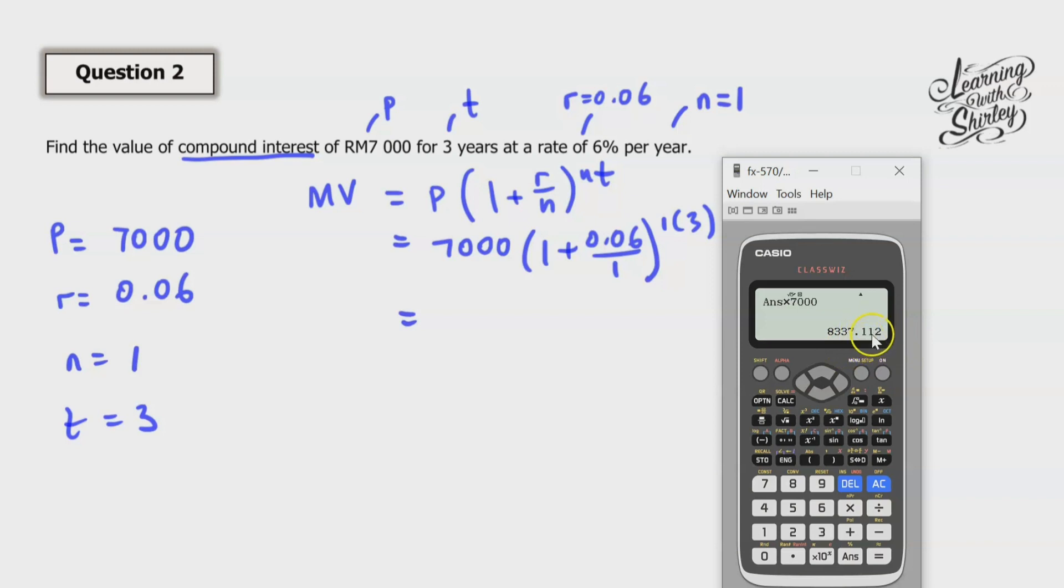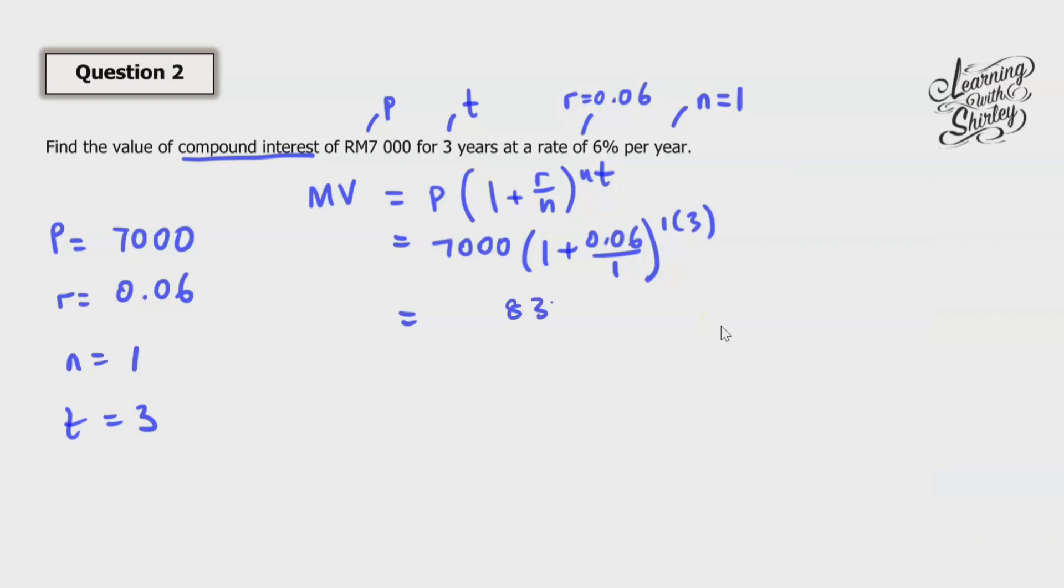We round up to 2 decimal places. So 8337.11. So in Malaysia, we use ringgit. So ringgit Malaysia, RM.